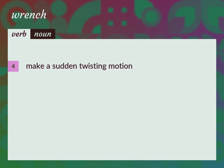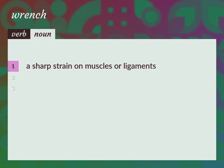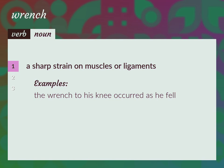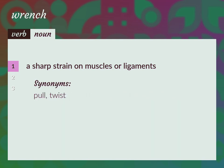Make a sudden twisting motion. A sharp strain on muscles or ligaments. Example: The wrench to his knee occurred as he fell. Synonyms: pull, twist.